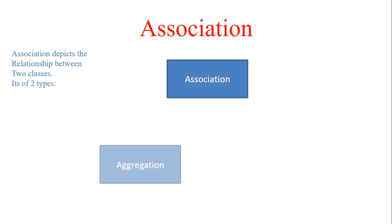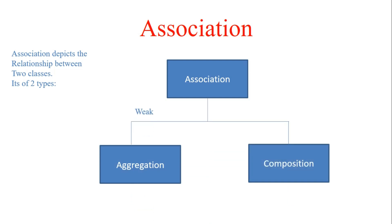This is a very favorite question of interviewers, so let's get started. Association is a relationship between two classes. It is basically of two types: aggregation and composition. Aggregation is a weak association, meaning two objects have loose coupling — one object can exist without another. Composition is a strong association, where one object cannot exist without another.